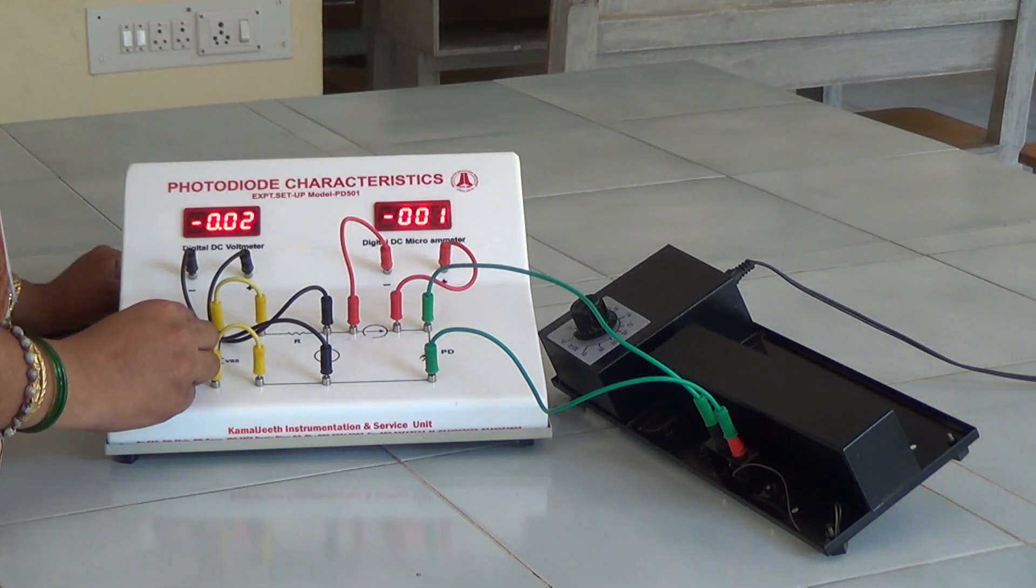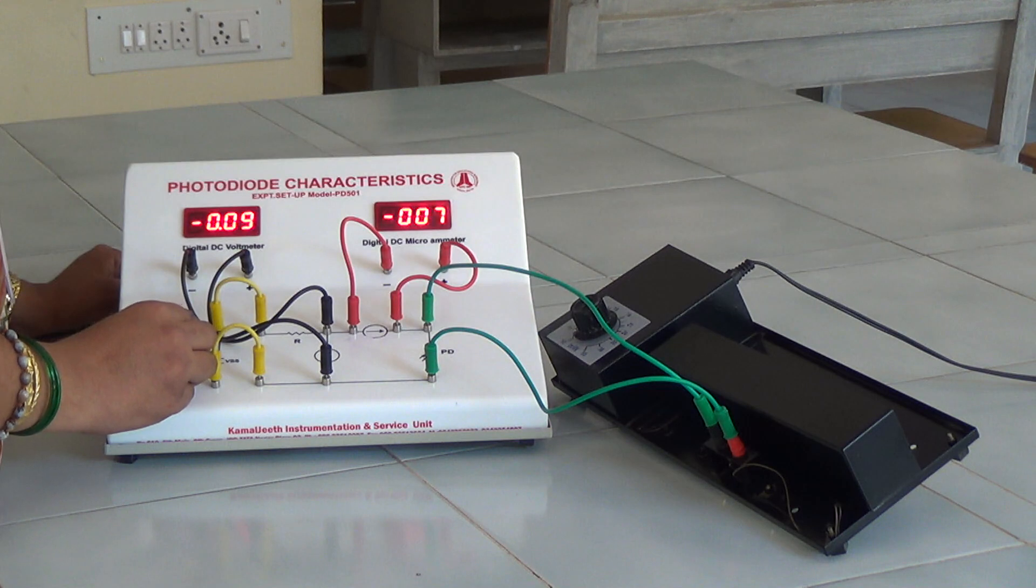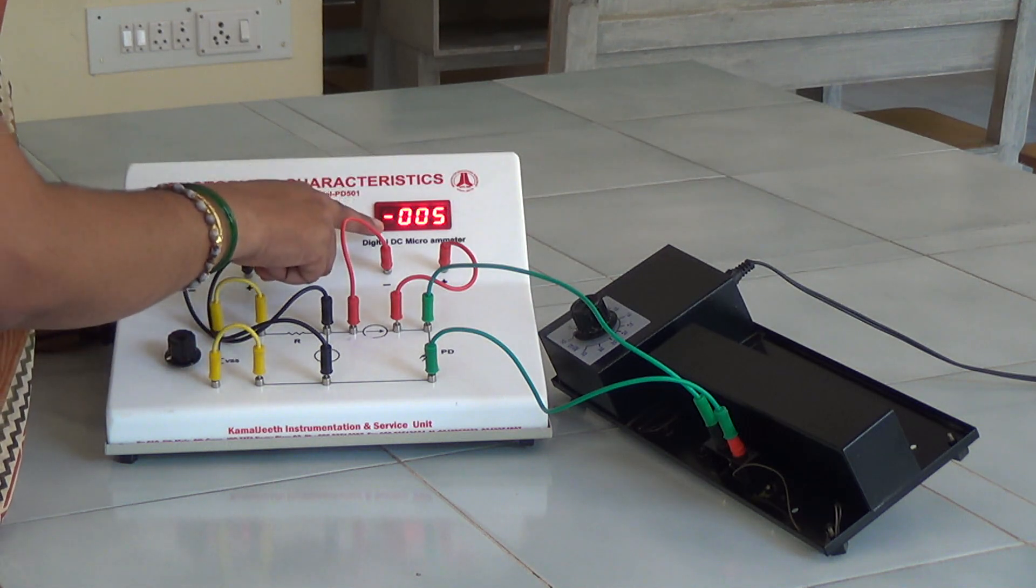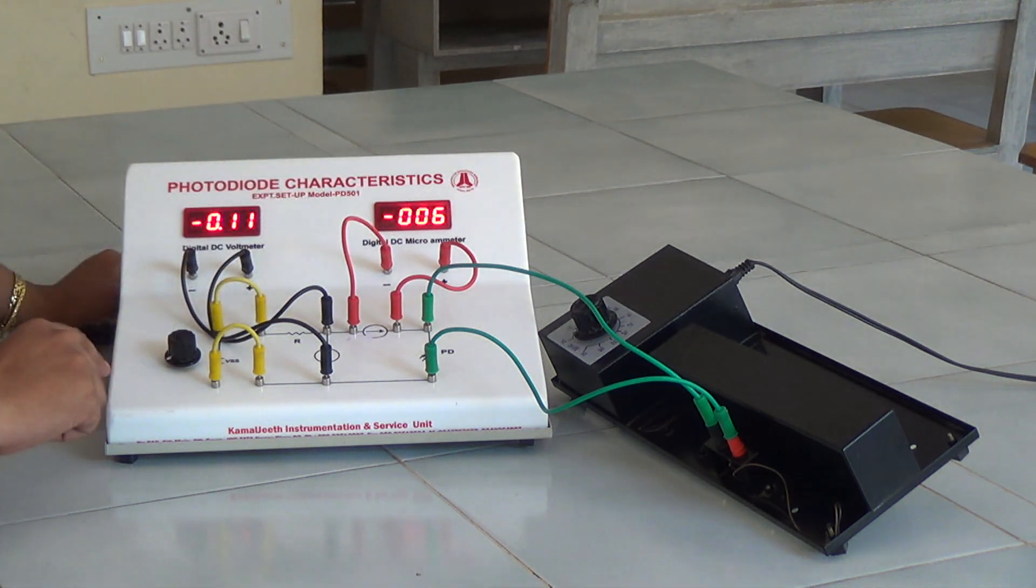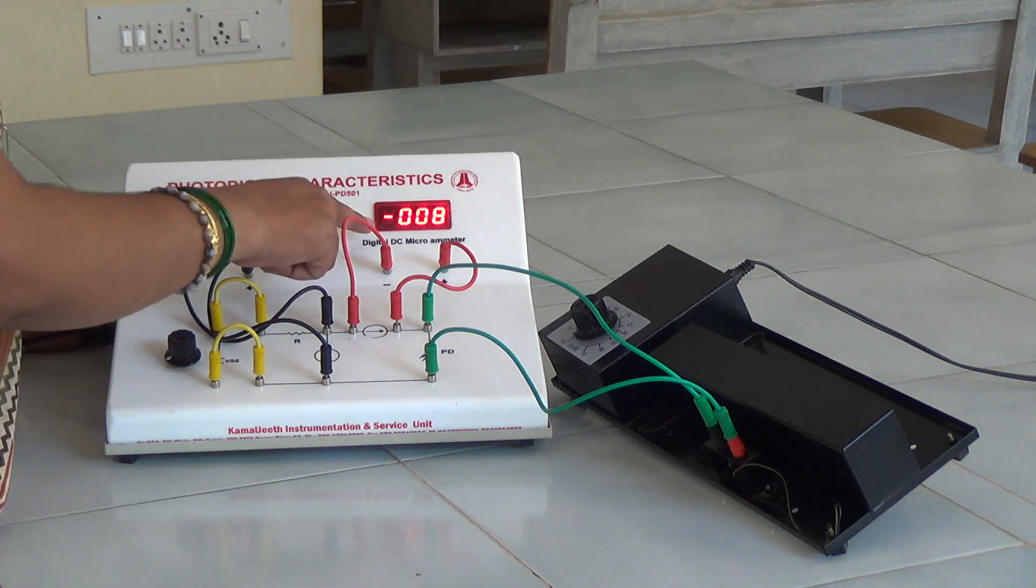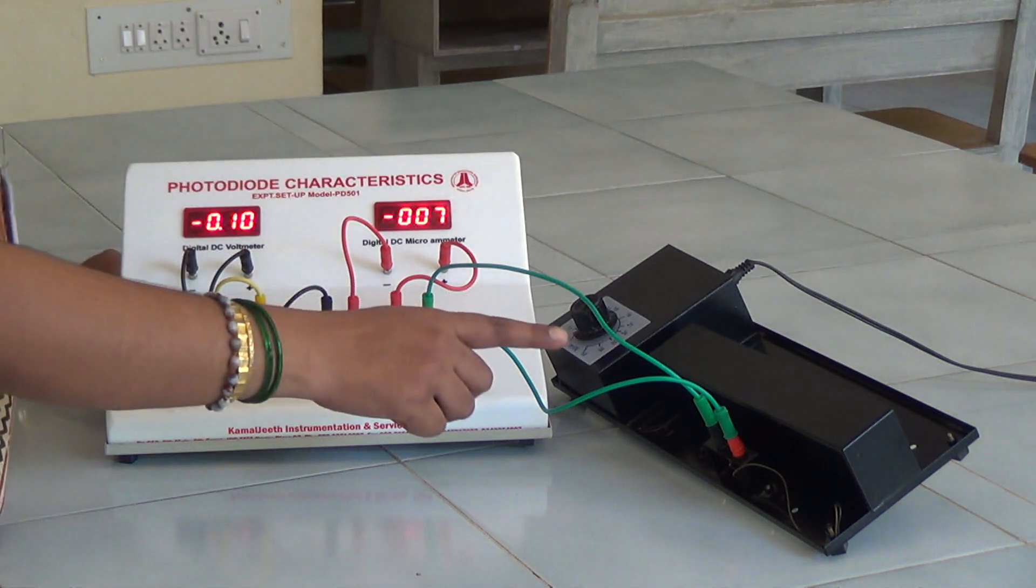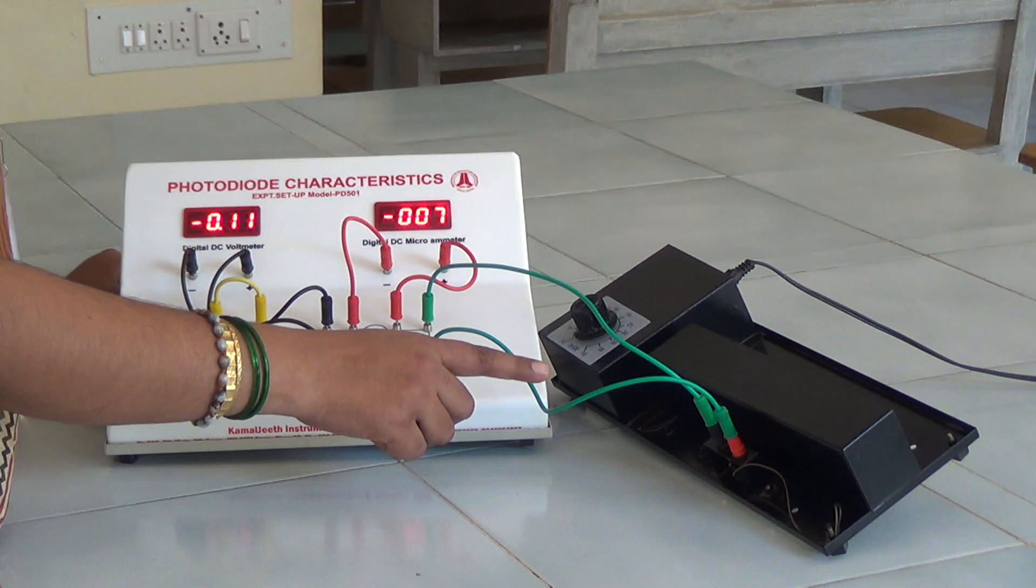The voltage is initially set to 0.1 volt. At this value of voltage, we get a value around minus 6 microamperes. The values are negative. That indicates that we have connected the photodiode in the reverse bias condition.